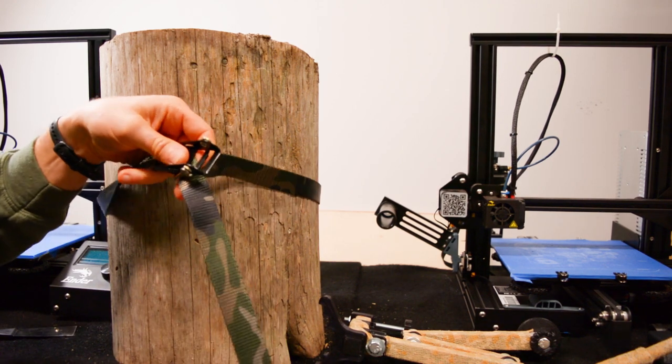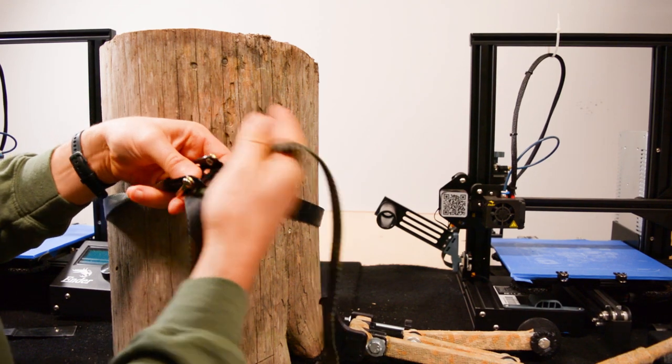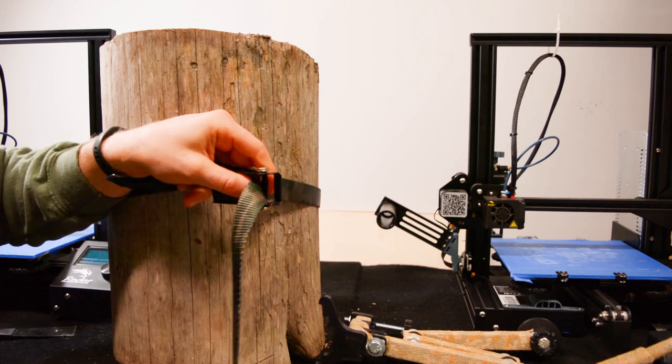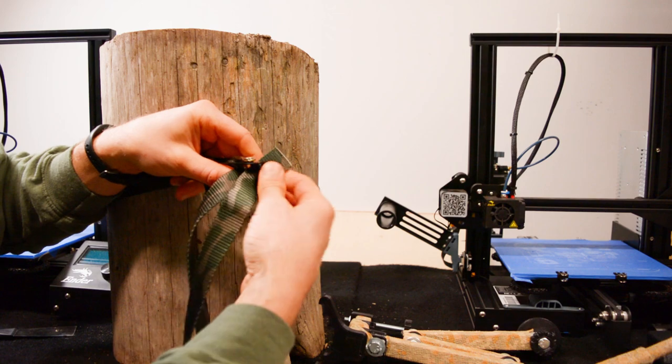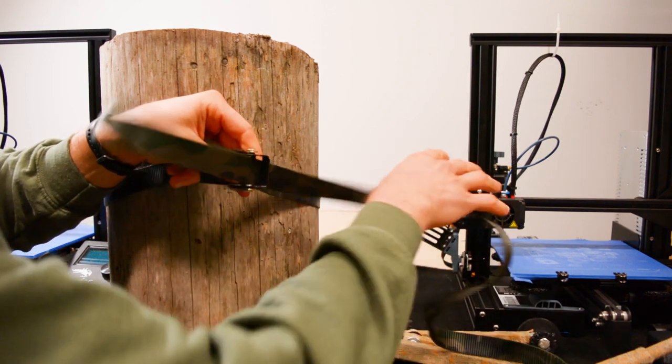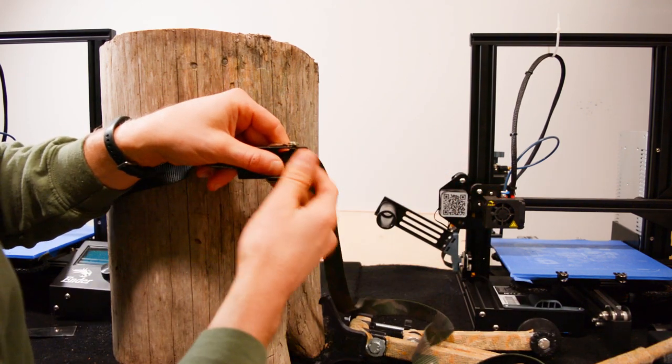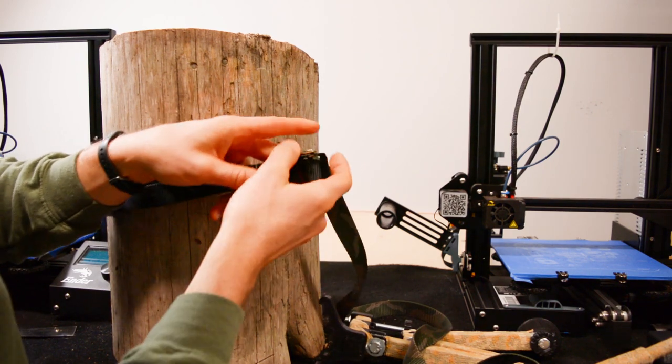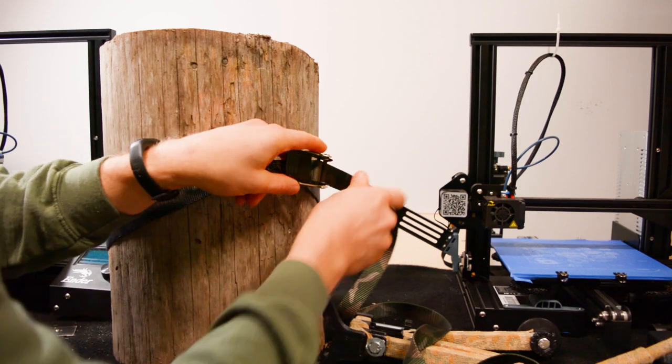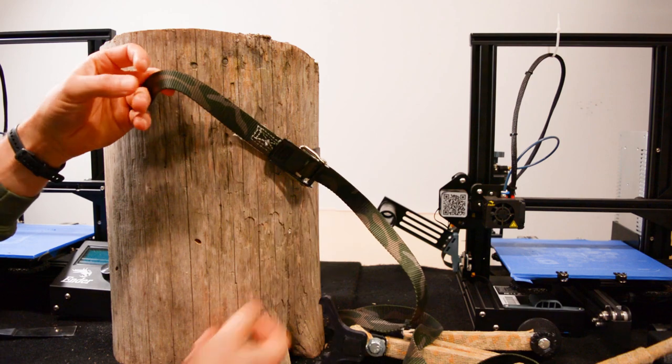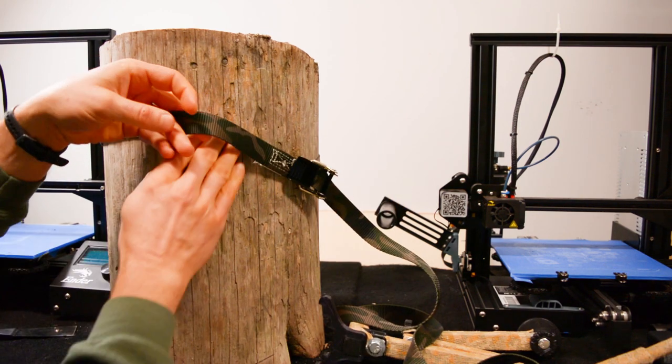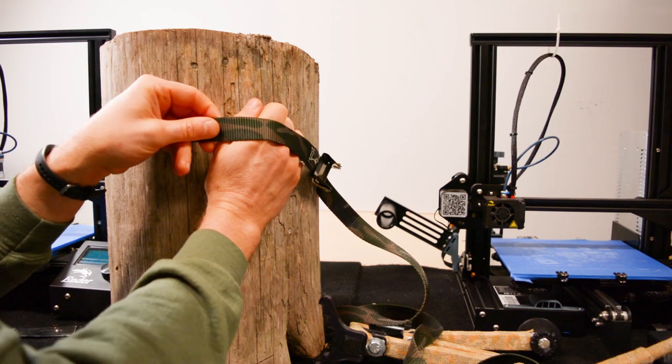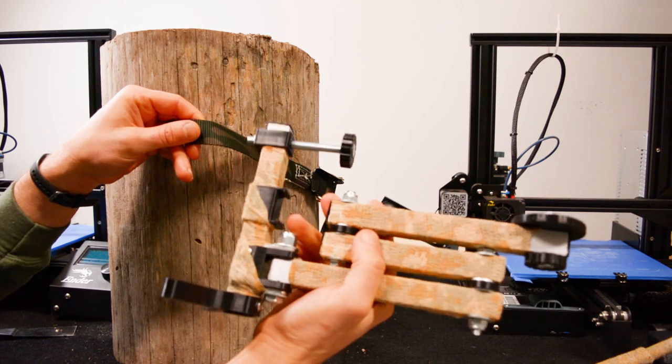You run your strap around the tree and then run your tag end through your closest slot. Then you run the tag end back through the other slot, and that's what actually does the tightening when you fold that over. You're going to keep that open and loose. Because there's no weight on there you can let it hang on the tree. Get it so you can fit your fist in there, about that much space.